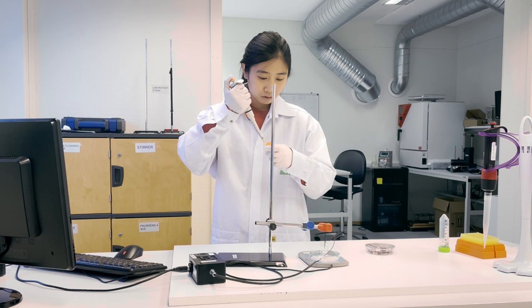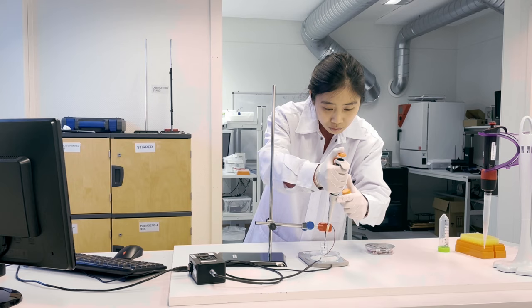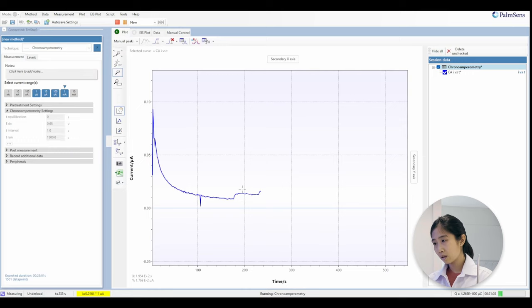Now we can give another spike to give another five millimolar increase. Again, don't put it too close to the electrode. Now you can see there's another increase in the staircase. So let's wait a little bit for the sensor to reach stability.